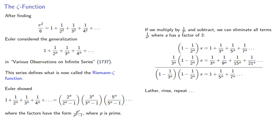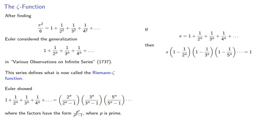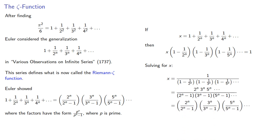And lather, rinse, repeat. And we find that x times this product of factors that look like 1 minus 1 over prime to the n is equal to 1, and so we can solve for x. And since x was the sum of the series, then the sum of the series of reciprocals could be expressed in product form.